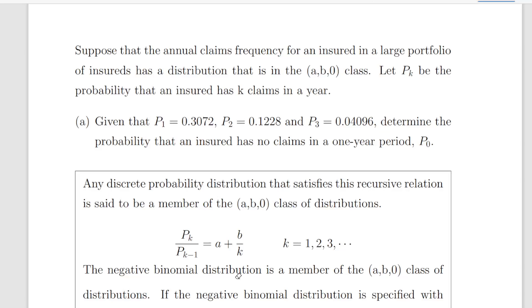In this presentation we are going to look at something that is connected to the negative binomial distribution, and that is the AB0 class of distributions. Suppose that the annual claims frequency for an insured in a large portfolio of insured has a distribution that is in the AB0 class.